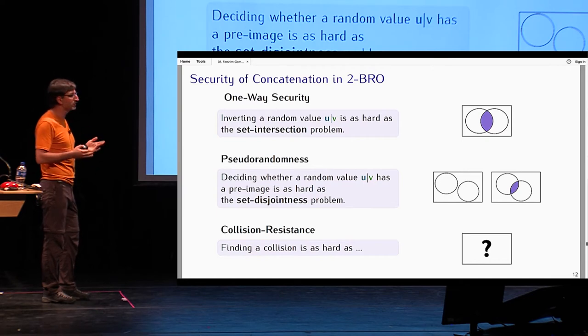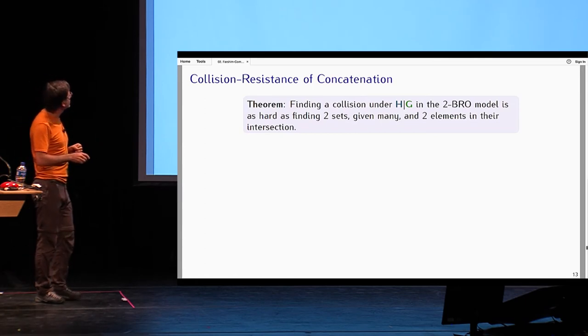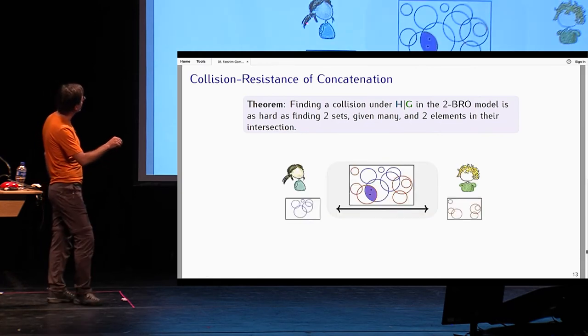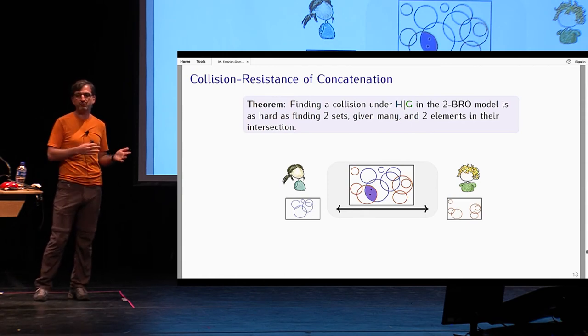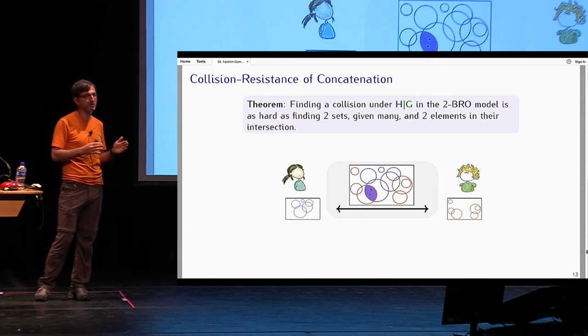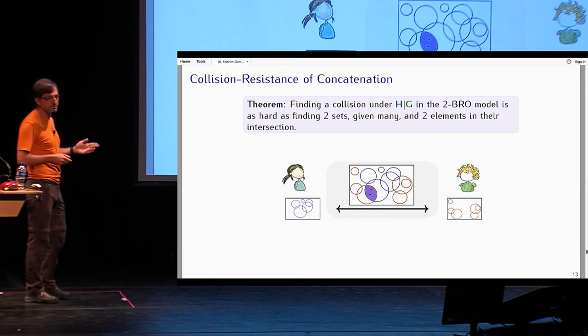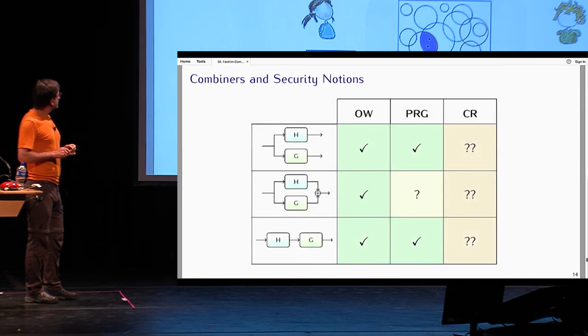What about collision resistance? This important property, what does that reduce to? It actually turns out that the natural problem underlying collision resistance is the problem of finding two sets among many sets and two elements in their intersection. Picture-wise, it looks like this: Alice holds many sets here, Bob also holds many sets here, and their task is to find two elements in the intersection of two of these given sets. This gives rise to a natural problem in communication complexity that, as far as I know, has not been studied. It would be interesting to derive lower bounds for this multi-instance version of the set intersection problem in communication complexity.